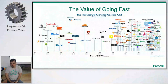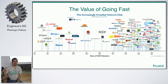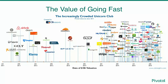Marc Andreessen said software is eating the world, and this diagram from CB Insights shows how. It plots all the logos of startups that reached one billion dollar valuation — the unicorn club. As you can see, on the far right there's almost a cloud of companies all valued at more than one billion dollars.